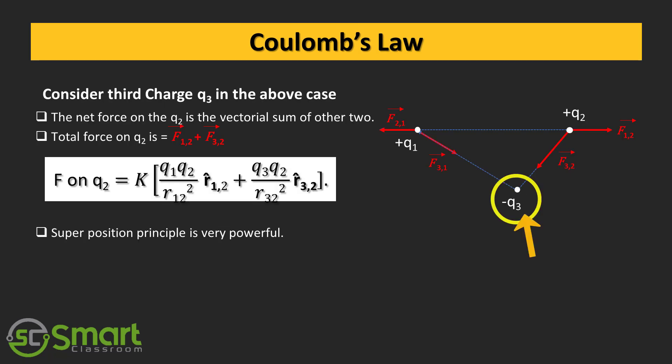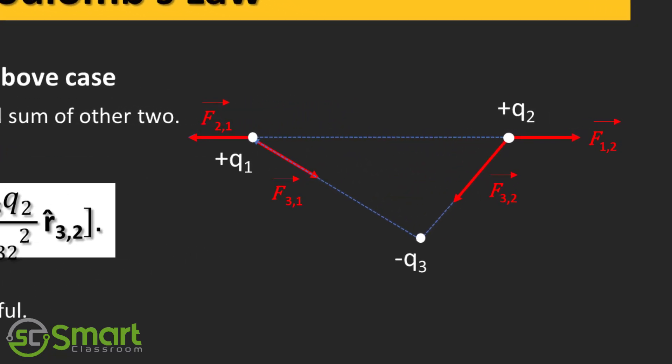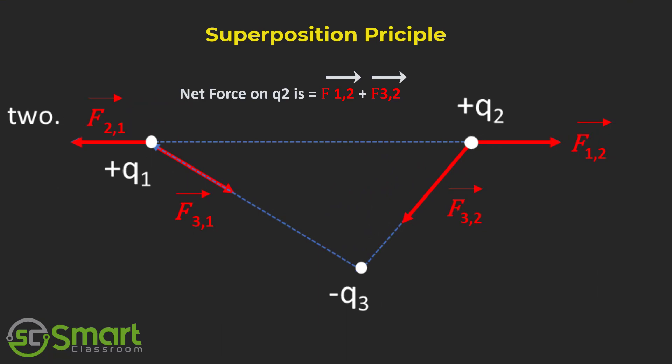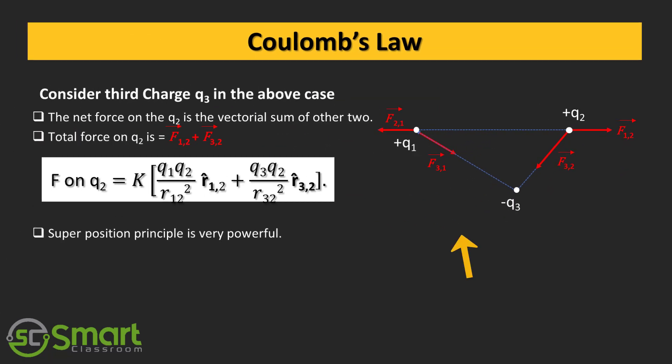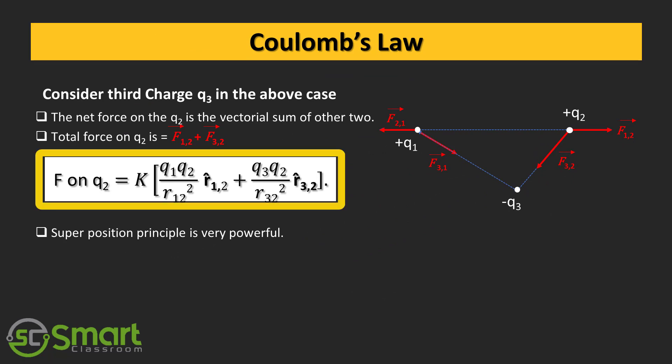Let us consider a third charge q3 in the above case. Now we want to find out the net force on q2 due to q1 and q3. To find this, we have to use superposition principle, that is the vectorial sum of the other two forces. That means total force on q2 equals f12 plus f32. As per Coulomb's law, force on q2 equals capital K into q1 q2 divided by r12 square into unit vector r12 plus q3 q2 divided by r32 square into unit vector r32. So in this case, the superposition principle is very useful and very powerful.